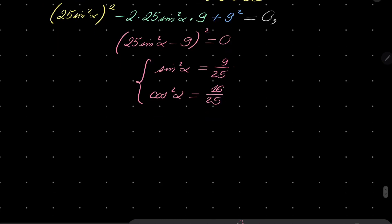Which allows us to compute the tangent of alpha, or first tangent squared. Tangent squared is sine squared over cosine squared, so it's 9 over 16.